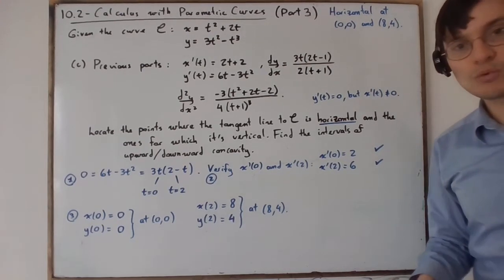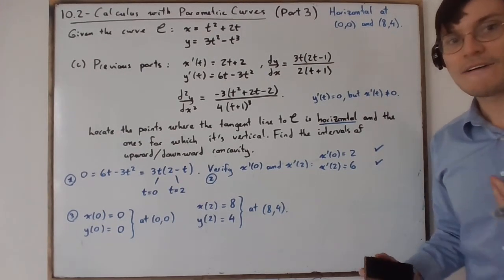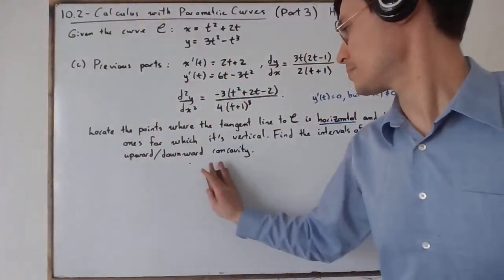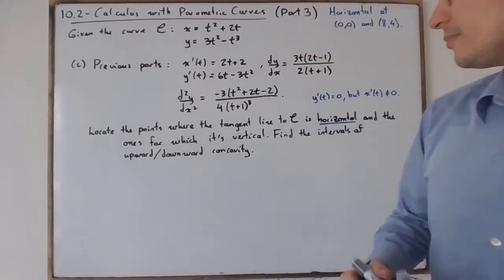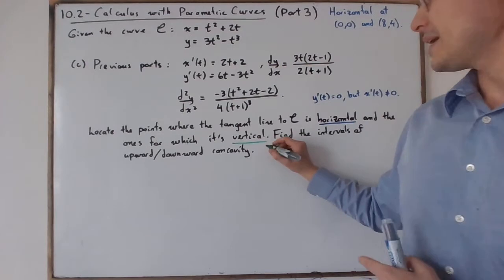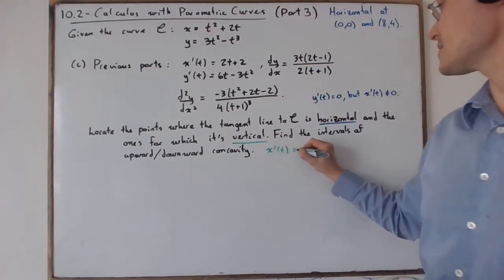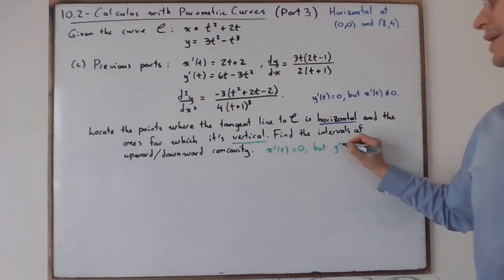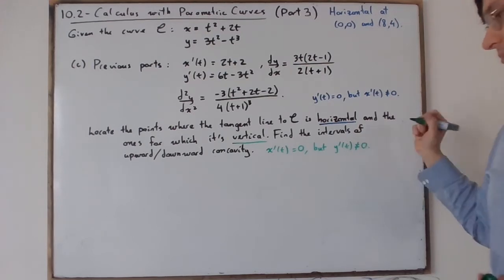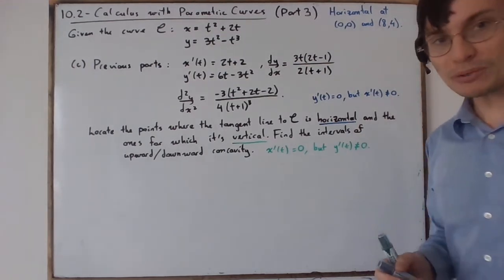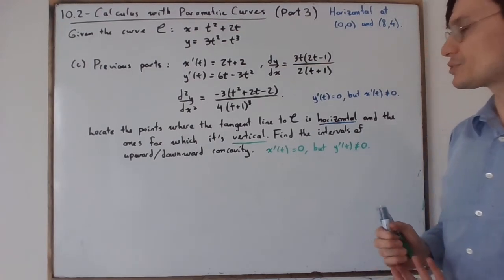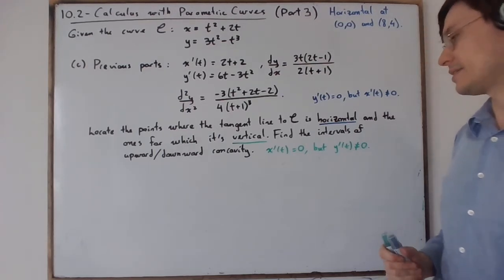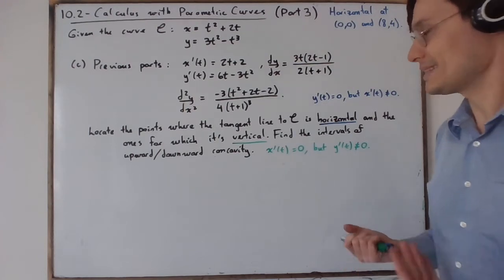Now we find where the tangent line to the curve is vertical. For a vertical tangent line, x'(t) must equal 0, but y'(t) must not equal 0. If both are 0, you would need to resort to another technique — likely the limit definition of the derivative to find dx over dy at that point.